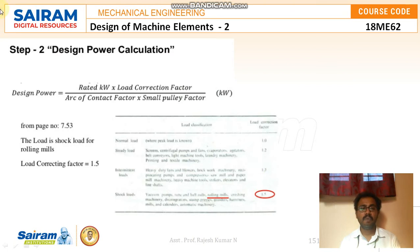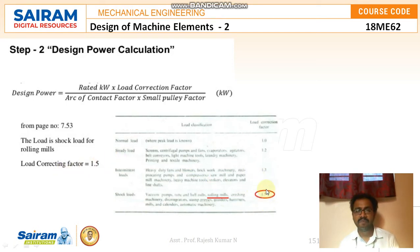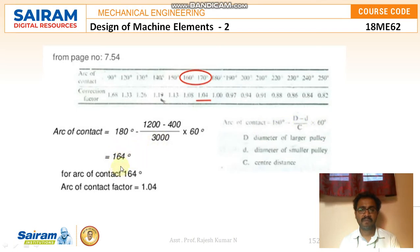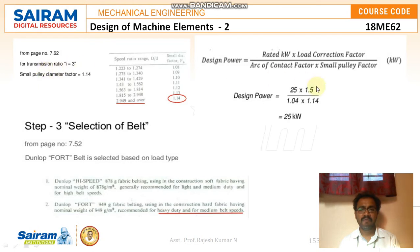Step 2: Design power calculation. The formula is: design power = (rated kW × load correction factor) / (arc of contact factor × small pulley factor). Since it is a shock load for a rolling mill, the load correction factor is assumed as 1.5. The arc of contact = 180° − ((D − d)/C × 60°) = 180° − ((1200 − 400)/3000 × 60°) = 164°. From the table, the arc of contact factor for 164° is approximately 1.04.